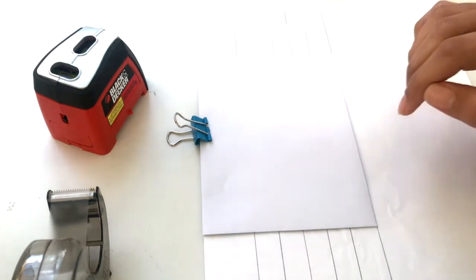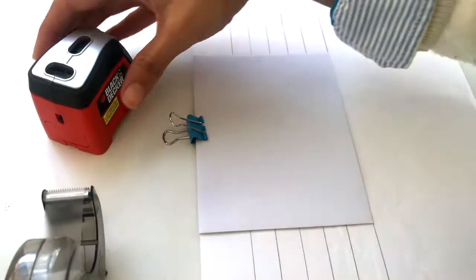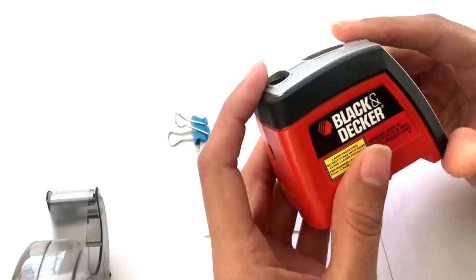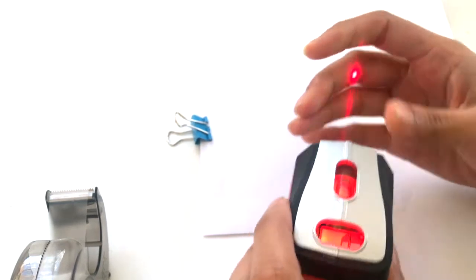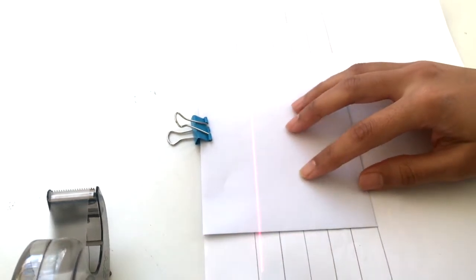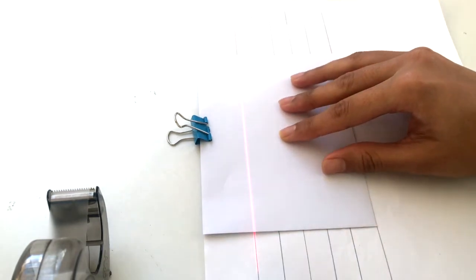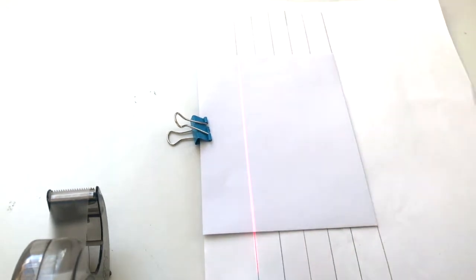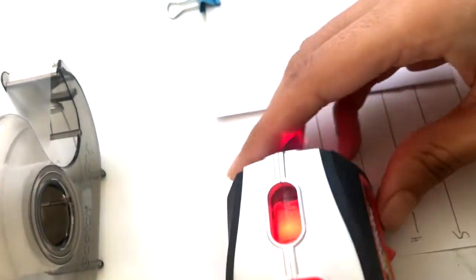Now I'm going to take my Black and Decker laser liner. I'm going to switch it on. When you get it you would probably want to put some batteries in it, although I think it comes with a pair, but they're not very long-lasting so make sure you have some on hand.